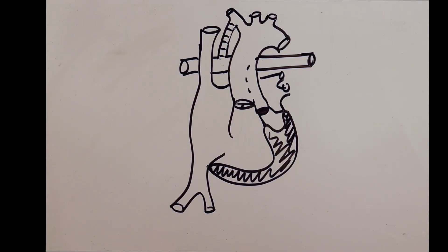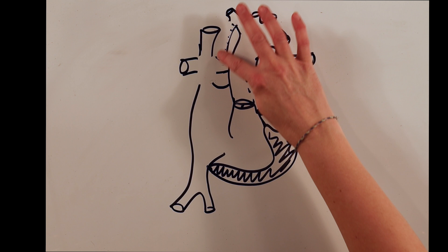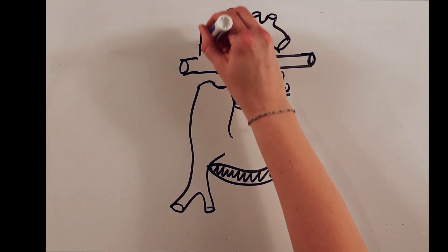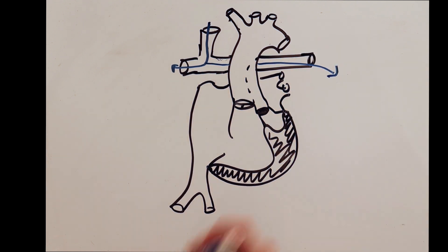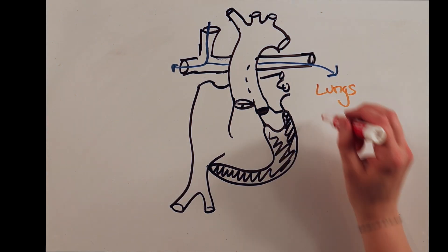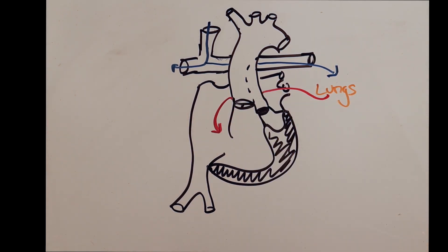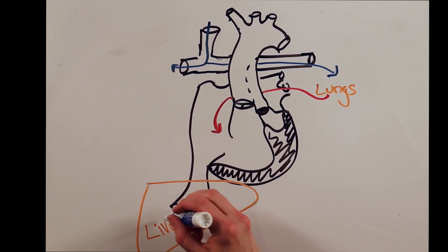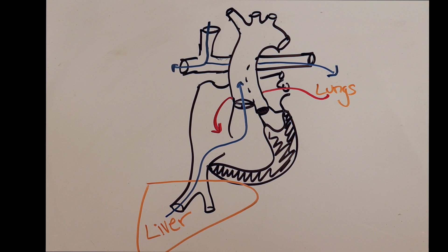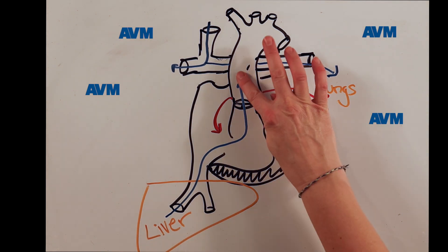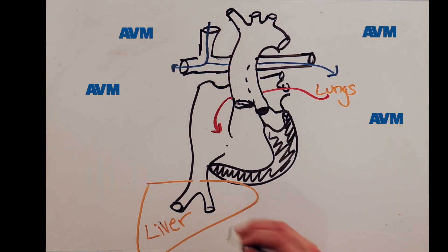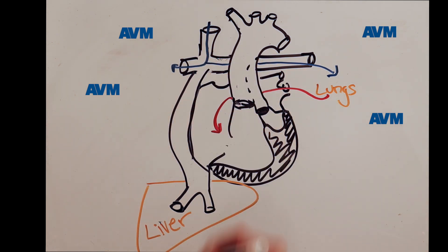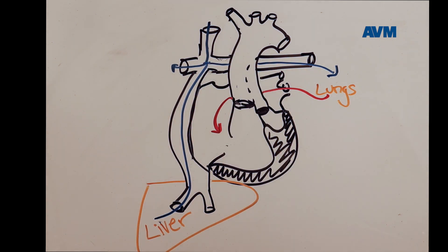Let's walk through the anatomy. During the Glenn procedure, the superior vena cava is attached to the pulmonary arteries. In most cases, the only blood going to the lungs is from the upper body, with a small contribution from the bronchial arteries. The blood from the inferior vena cava, which contains blood from the liver, goes out to the body — this is the time AVMs form. With the Fontan, the IVC is attached to the PAs, so blood from the liver goes directly to the lungs, and the AVMs go away.